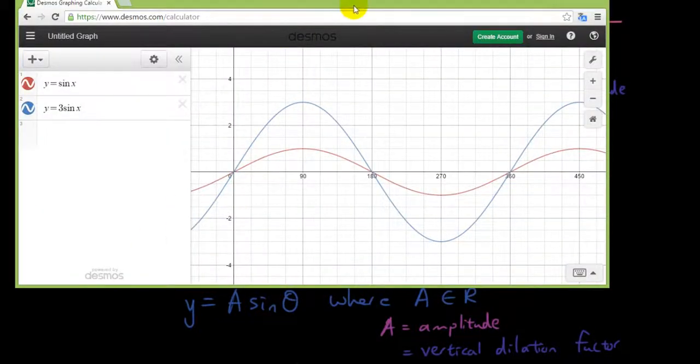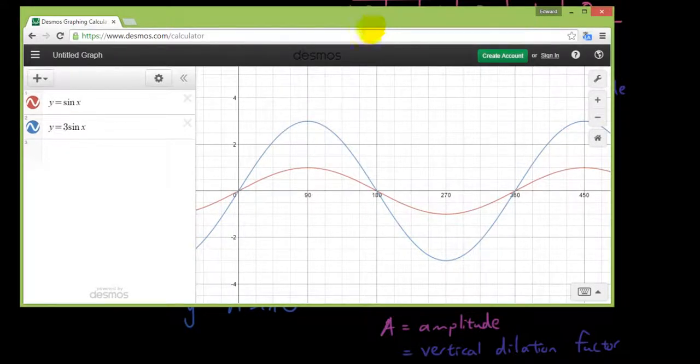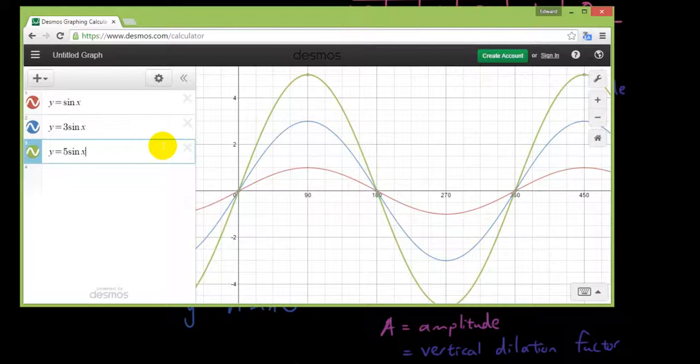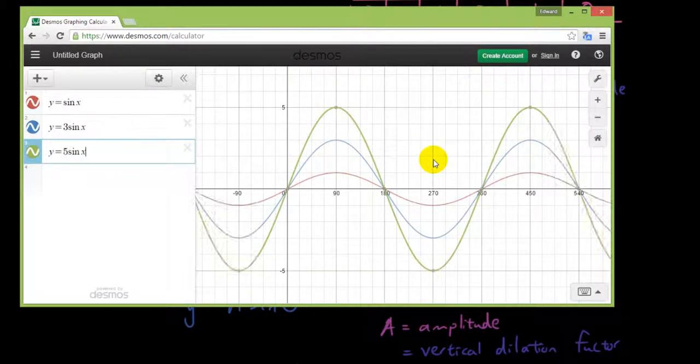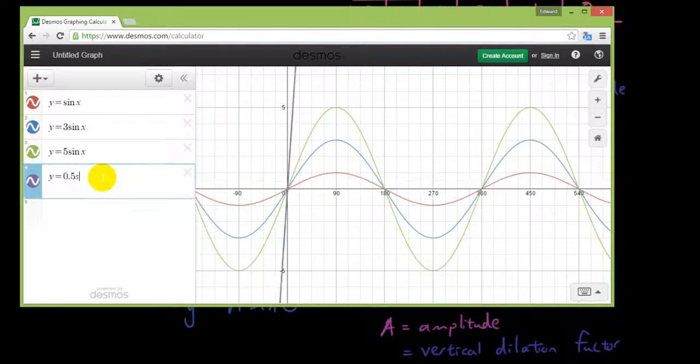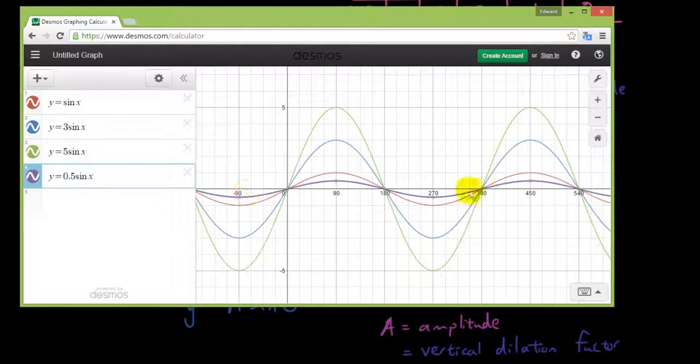I'm just going to show you how you draw it. In Desmos, I'm going to type in y equals 5 sine theta. That's the green one. And y equals 0.5 sine x, and that's the purple one.